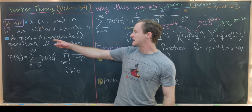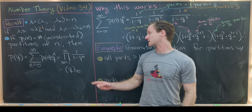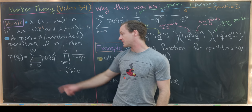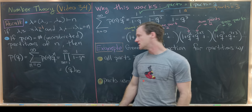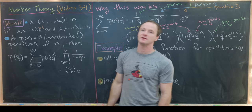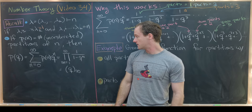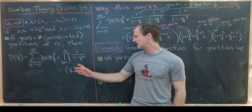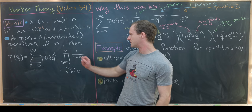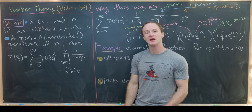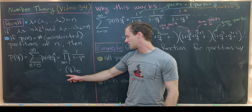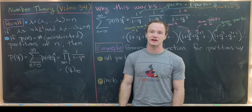If we set p(n) equal to the number of unrestricted partitions of n — sometimes called the partition function — then the generating function for p(n), sometimes called p(q), is the sum as n goes from 0 to infinity of p(n) q^n, where p(0) = 1. That equals an infinite product of geometric series terms: the product as m goes from 1 to infinity of 1/(1 − q^m). Using the Pochhammer symbol from previous videos, we can write this as (q)_∞.